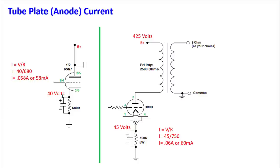If we measure 40 volts across the 680-ohm cathode resistor, then 40 divided by 680 ohms gives us 58 milliamps through that tube. Similarly, with 425 volts on the other circuit, measuring 45 volts dropped across a 750-ohm resistor gives 60 milliamps of current flowing through the tube — which is the same as what flows through the output transformer primary from the DC standpoint.